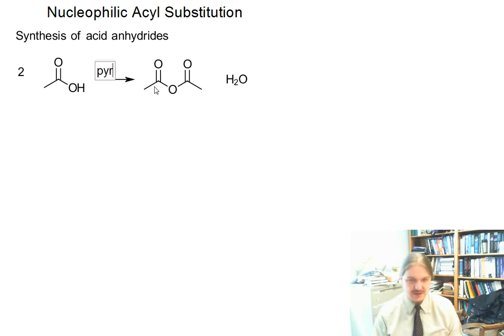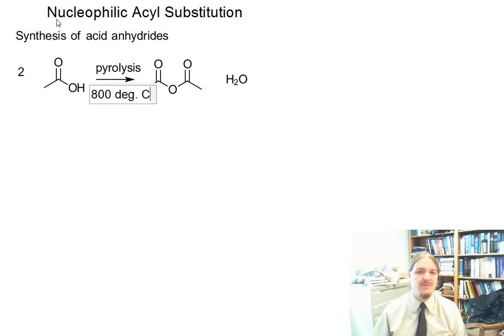One is by a process called pyrolysis, where we just heat the thing up to ridiculous temperatures. For a conversion of acetic acid to acetic anhydride, we're talking like 600 to 800 degrees Celsius, which is crazy. But feasible, perhaps, in an industrial setting.